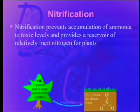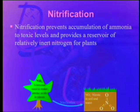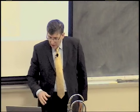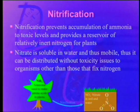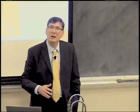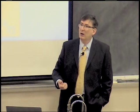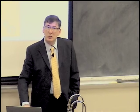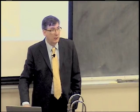Nitrification prevents accumulation of ammonia to toxic levels and provides a reservoir of relatively inert nitrogen for plants. It can sit there in the soil and it won't blow up. Nitrate is soluble in water and thus it's mobile and can be distributed without toxicity issues to other organisms. This is one way of sharing the nitrogen around. This is why you put decaying plant material or cow's manure on your garden and it grows well — it's returning that nitrogen to the soil so plants can absorb it.